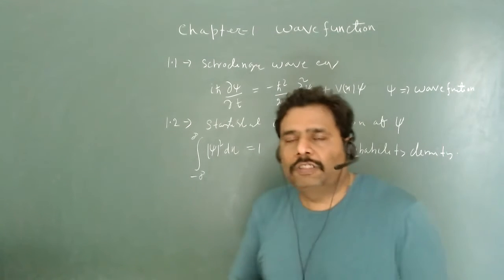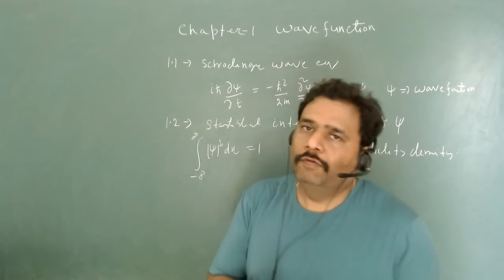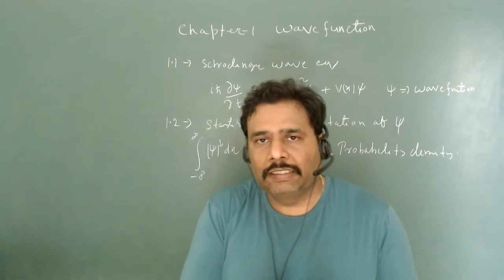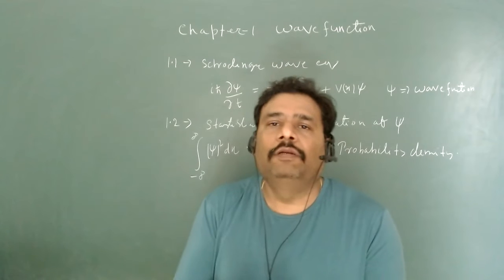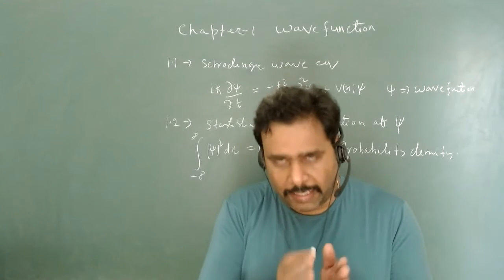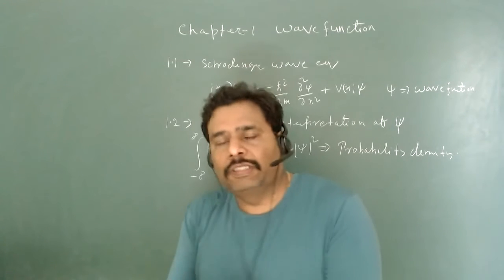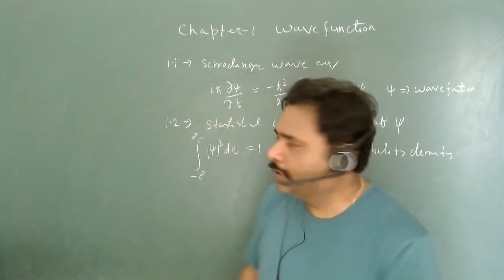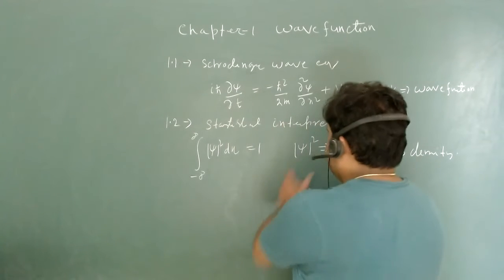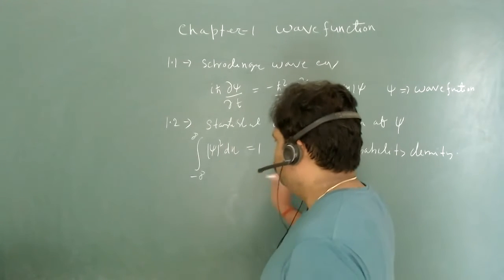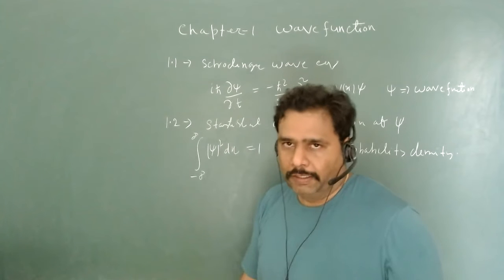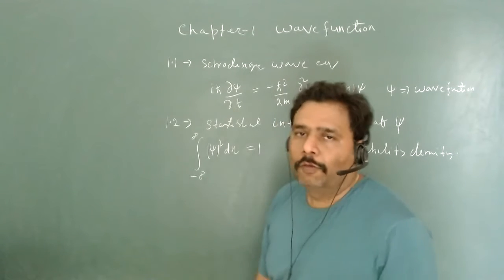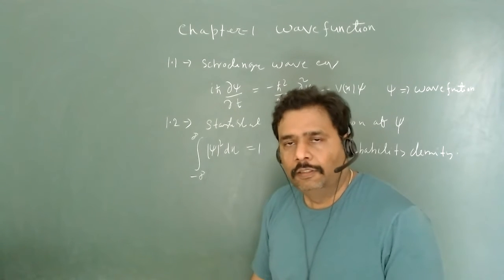This |ψ|² tells you the probability of the particle lying between position x and x + dx. If we are treating it as probability density, |ψ|² should be normalized — this is the normalization condition.